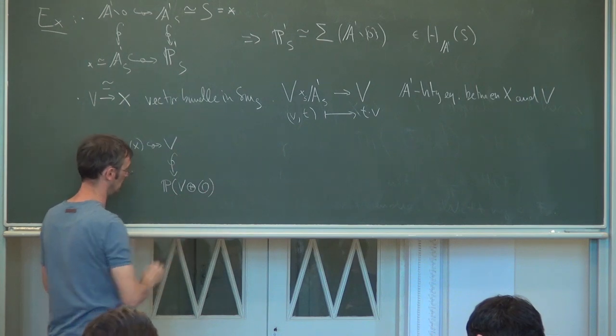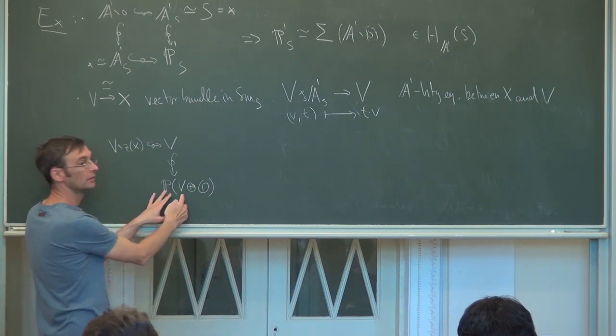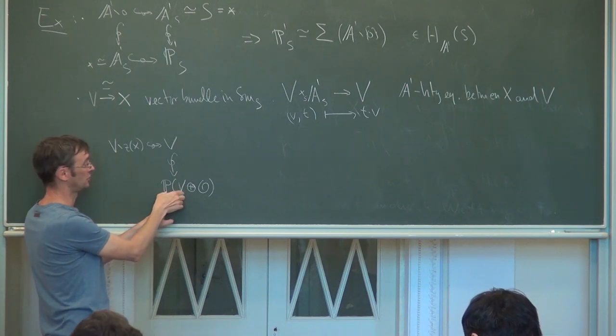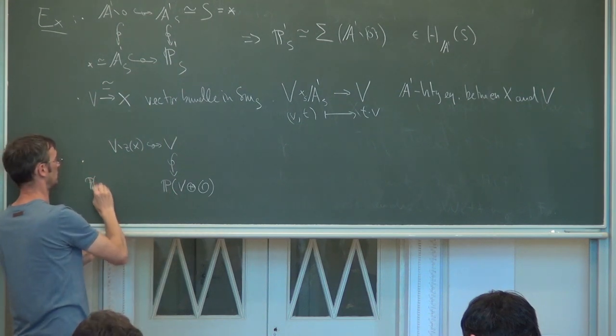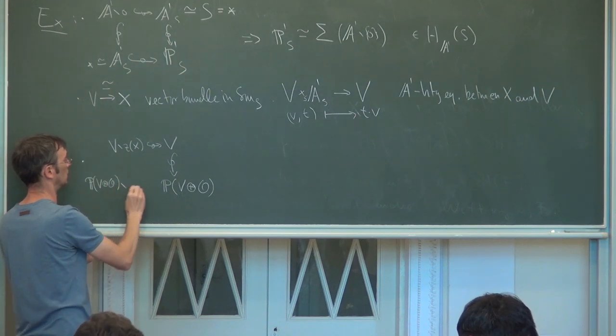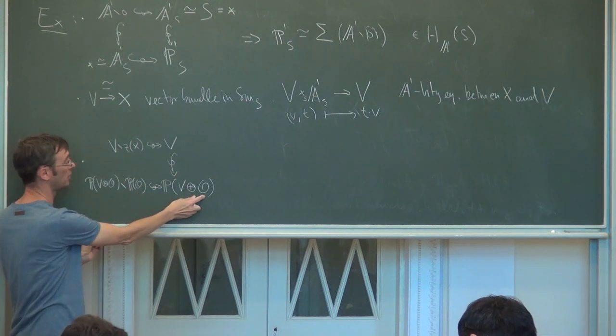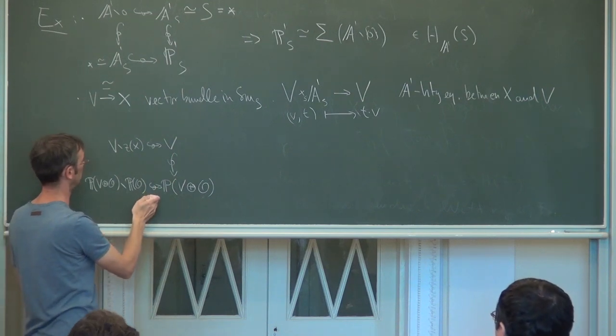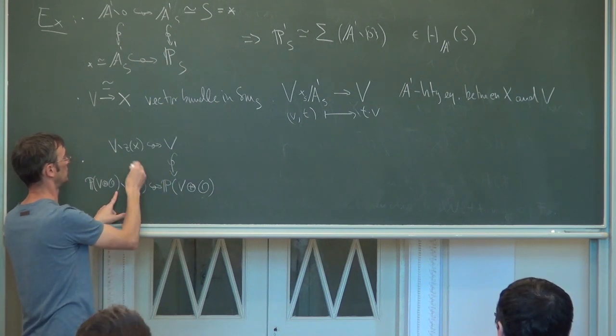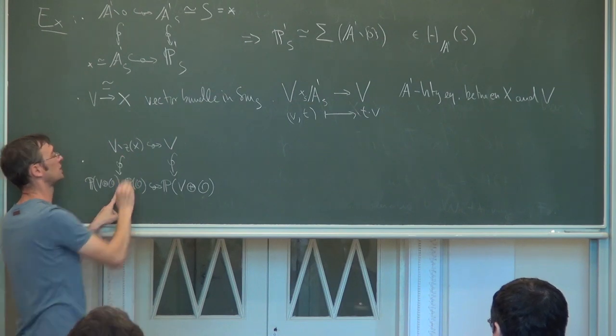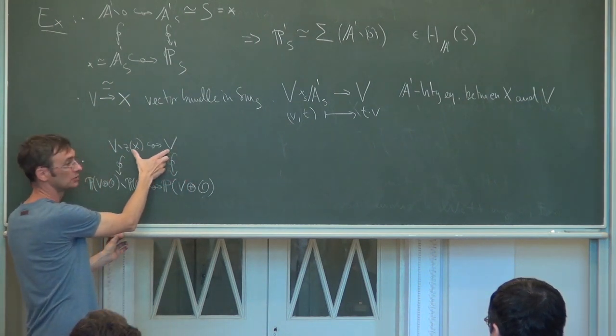Still having this vector bundle here, the Thom space is defined as the quotient V modulo the complement of the zero section. But you can also think of V as being an open subset of the projectivization of the direct sum of V with a trivial line bundle. And the complement here would then be the projectivization of V itself. And what we have here also is the complement of the projectivization of this line bundle here, which is just X.